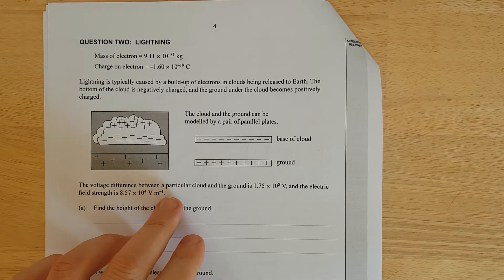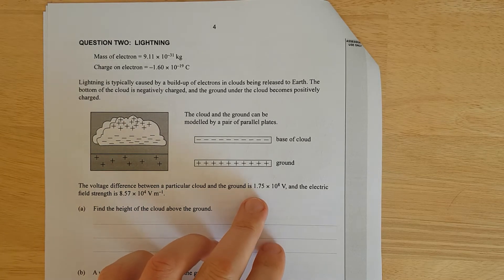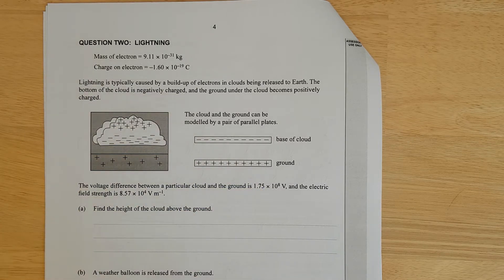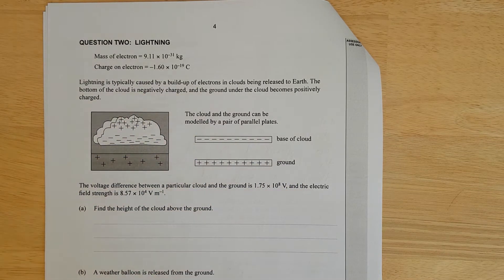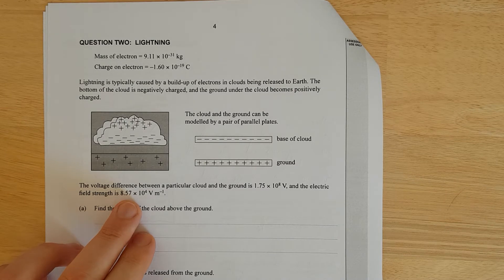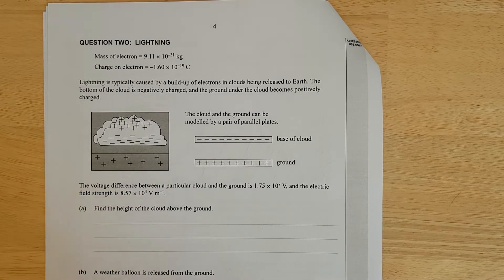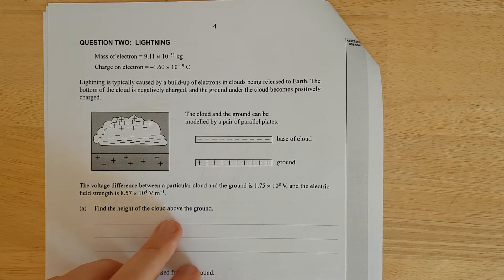The voltage difference between the particular cloud and the ground is 175 million volts. The electric field strength is 85,700 volts per meter. Find the height of the cloud above the ground.